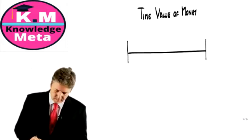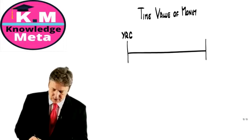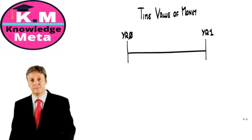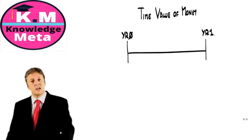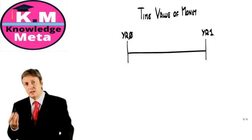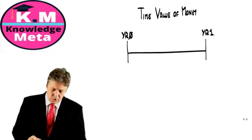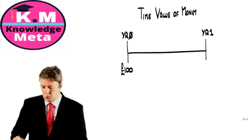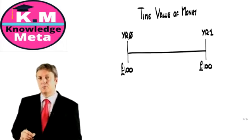This is a timeline. We have year zero today. We have year one, one year's time. And I'm going to ask you a very simple question. Would you rather receive £100 today or £100 in one year's time?